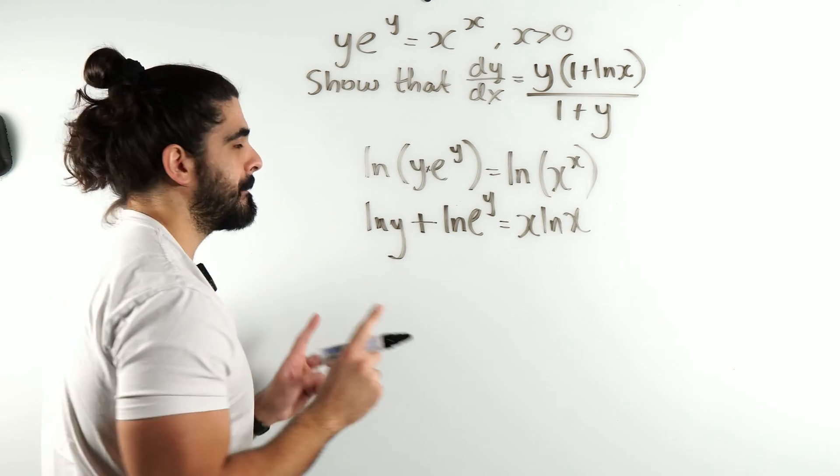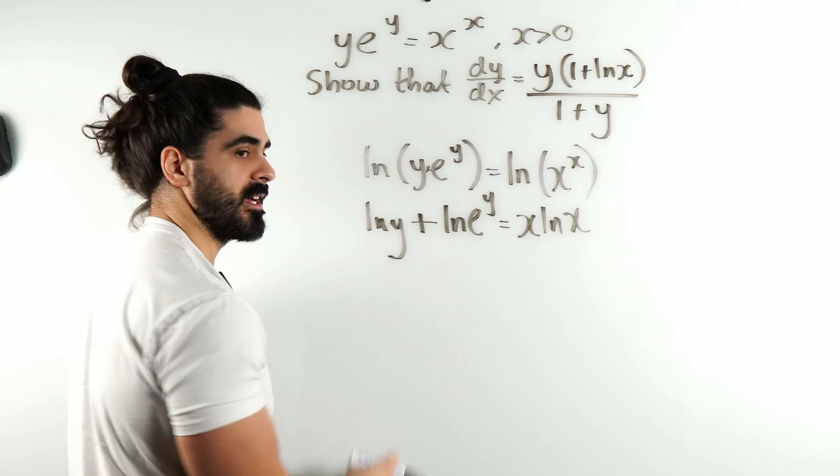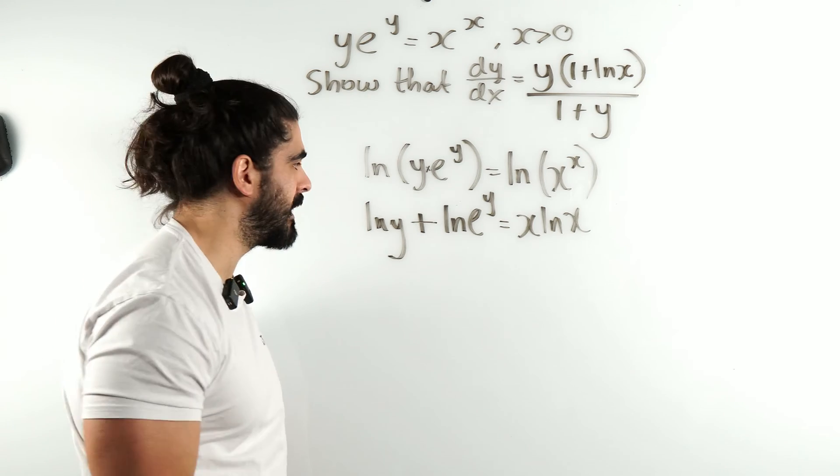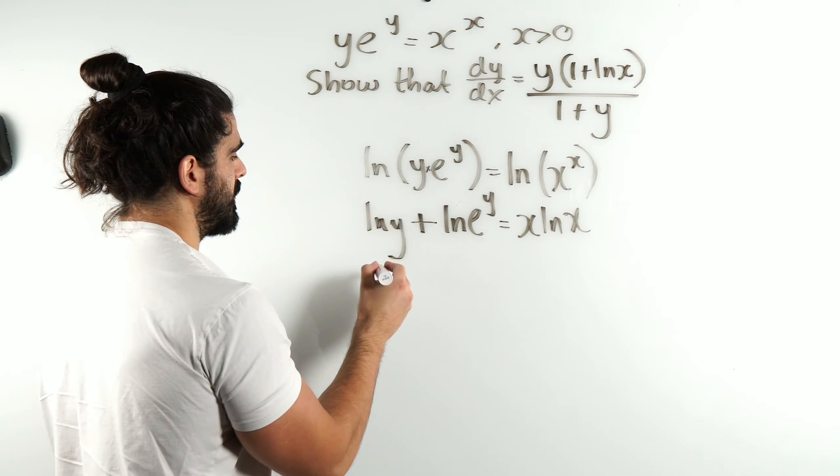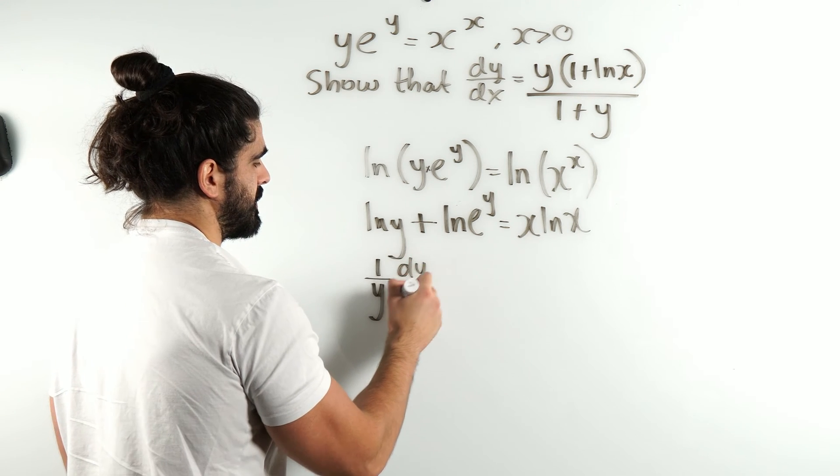Okay, now implicit differentiation. We differentiate all y's as normal and multiply by dy/dx. ln(y) differentiates to 1/y, multiply by dy/dx.